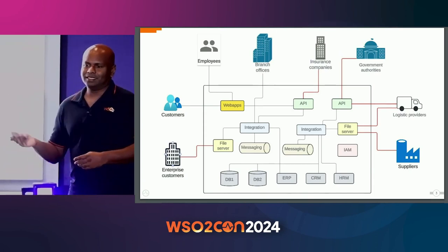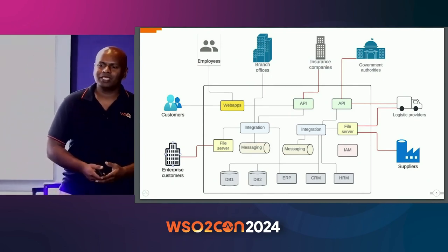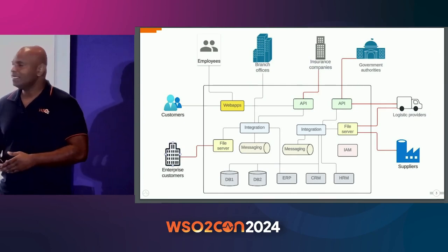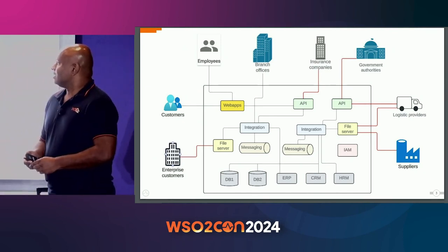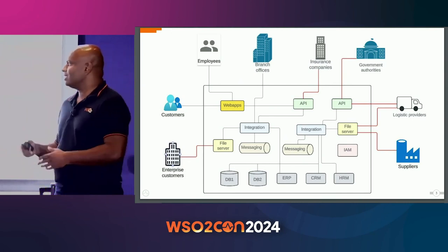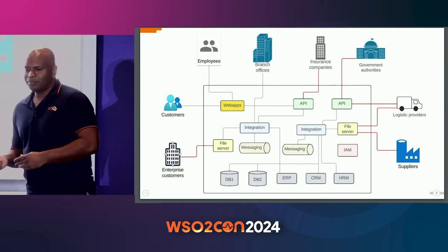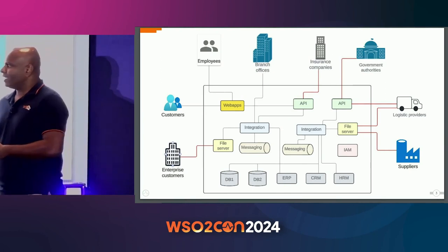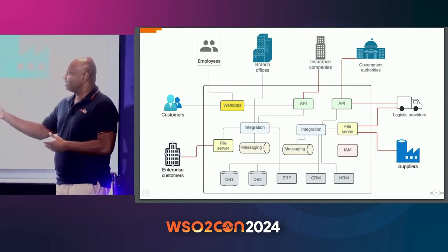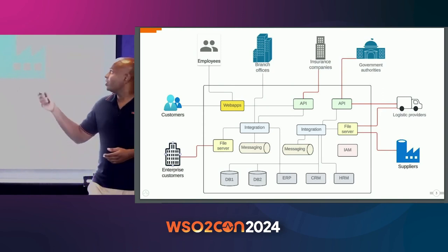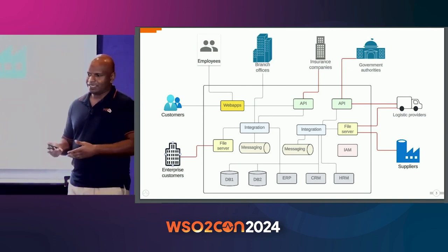We also have external communications. We have to communicate with our customers — for example, if we are a retail company, we might have consumers interacting with our sales portal, and employees interacting with internal web portals. In addition, there are important external parties — organizations we interact with. For example, if you are a manufacturer, you might have multiple enterprise customers who are different from individual consumers because these are organizations. You might also work with insurance companies, government authorities, transportation providers, suppliers, and so on.